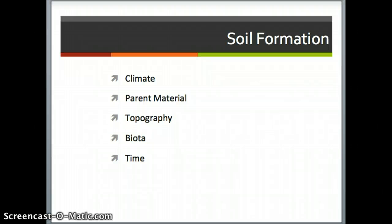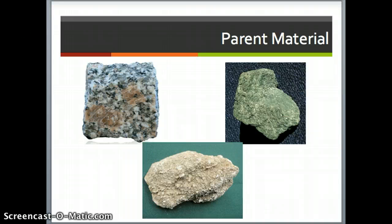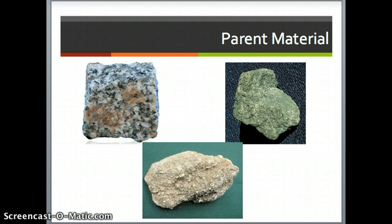I want to spend a few minutes talking about one of these in particular because it is a very important part of what we learn about how soils function as we go on in this course, and that is parent material. The parent material, as I said, is the rocks or the geology under the Earth's surface that are the things being acted upon to break down to form soil. And here you can see three very different kinds of rocks. The one on the top left is a piece of granite, which is an igneous rock. The one on the right that's a little bit green is a piece of serpentine or serpentinite, which is a metamorphic rock.